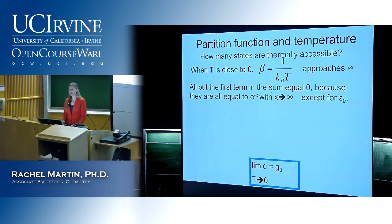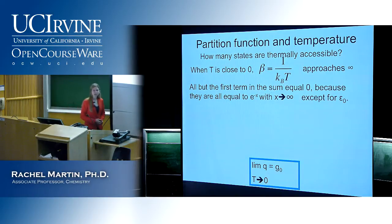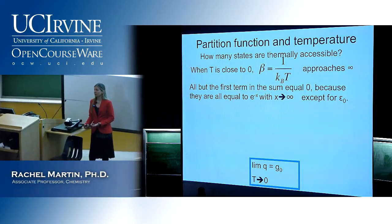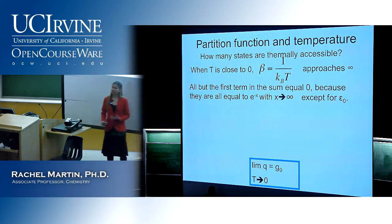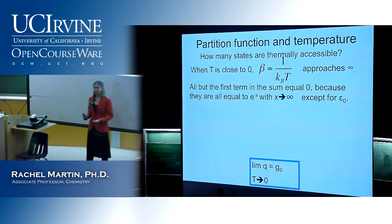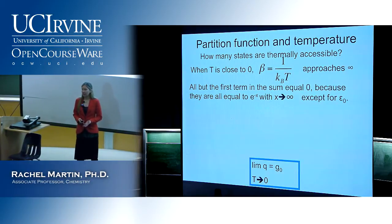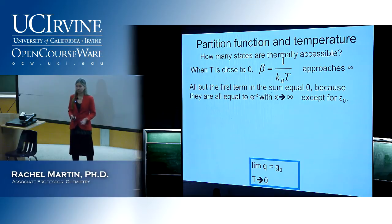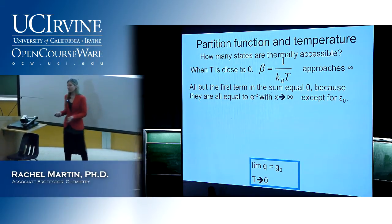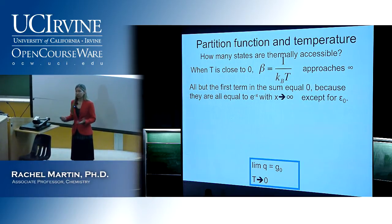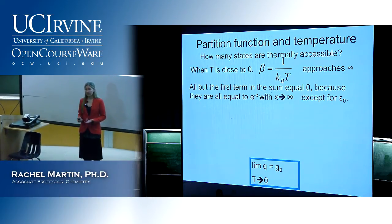A lot of people who look at this from a theoretical physics perspective would say that beta is really the fundamental parameter rather than temperature. Our standard understanding that higher temperature means more entropy and motion seems to imply we can't have a negative temperature. But that's because we're thinking about a particular type of physical system — molecules that are moving around. In other sorts of systems, we can have negative temperature.